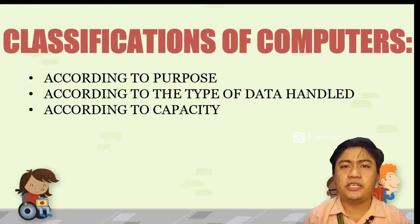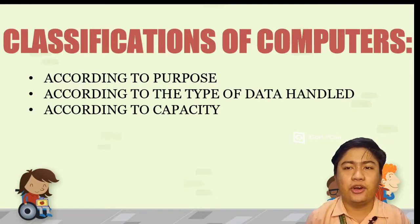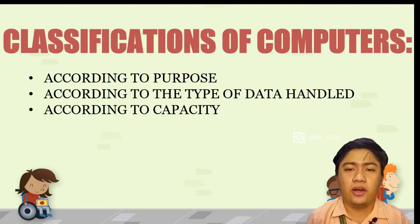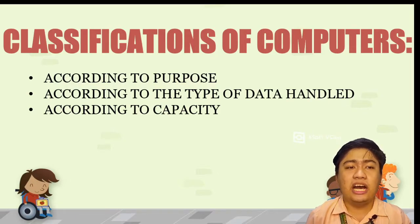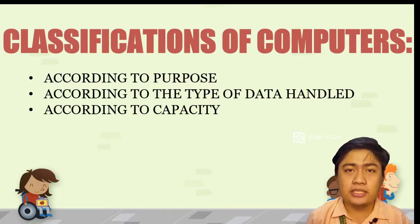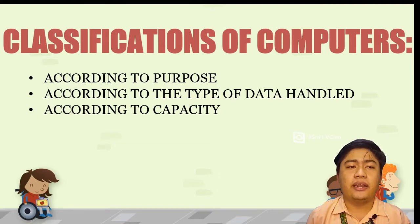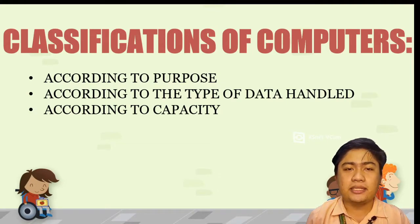Computers are classified according to different criteria. The following are the classification of computers. First one, according to purpose. Second one, according to the type of data handled. And third one, according to capacity.